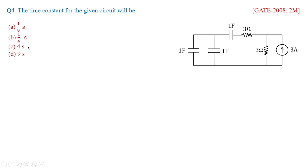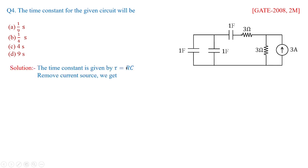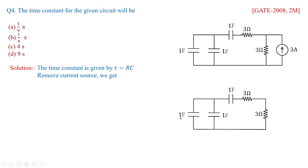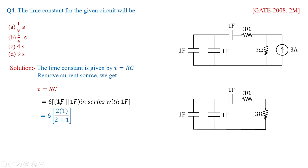For time constant problems: whenever you have a current source, open-circuit it. The time constant for an RC network is tau equals RC. After open-circuiting the current source, you have 1 farad in parallel with 1 farad, in series with another 1 farad, and the combination multiplied by a resistance of 3 plus 3 equals 6 ohms. Two 1 farad capacitors in parallel give 2 farads; 2 farads in series with 1 farad gives 2/3 farads. So tau equals 6 multiplied by 2/3, giving 4 seconds.